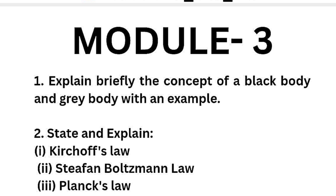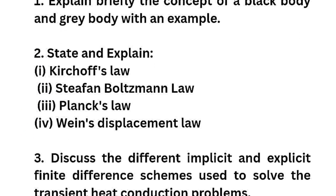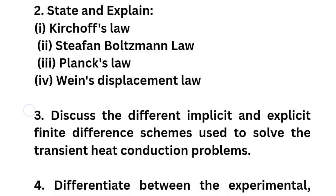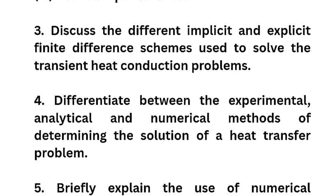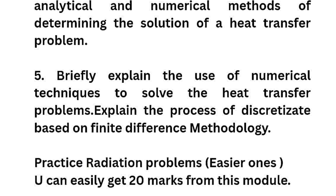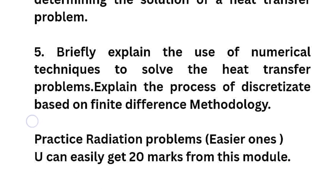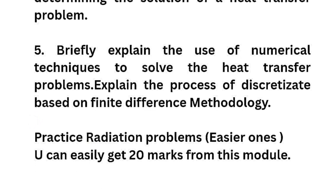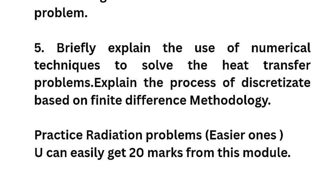In module three: explain briefly the concept of a black body and gray body with an example; state and explain Kirchhoff's law, Stefan-Boltzmann law, Planck's law, and Wien's displacement law — this may be a 10-marks question. Also: discuss the different implicit and explicit finite difference schemes used to solve transient heat conduction problems; differentiate between experimental, analytical, and numerical methods; explain the use of numerical techniques and the process of discretization based on finite difference methodology. Practice radiation problems only — the easier ones — and you can easily get 20 marks from this module. This is the scoring module, not just a passing module.